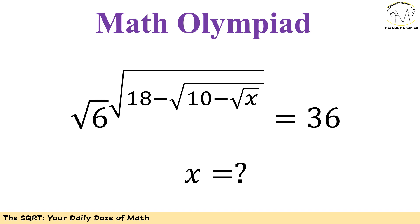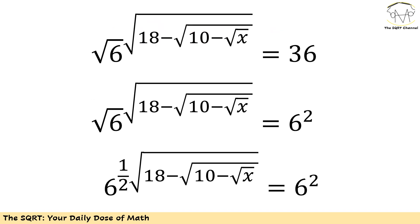Now let's see what we are going to do to solve this problem. First of all, remember 36 can be written as 6 to the power of 2. Now we have this radical 6 to the power of an equation.